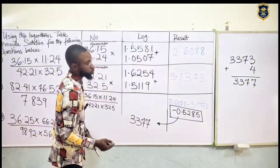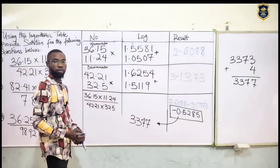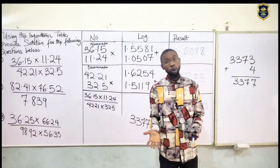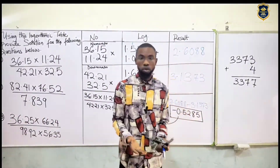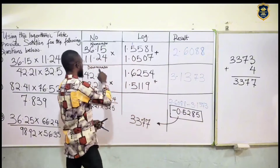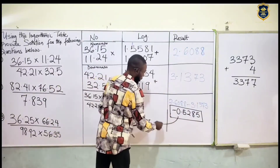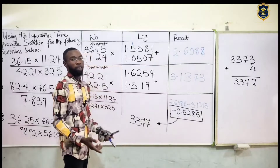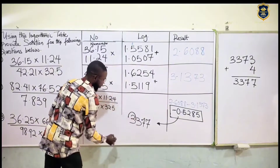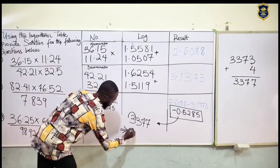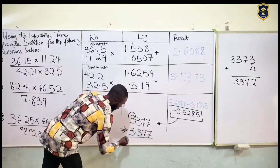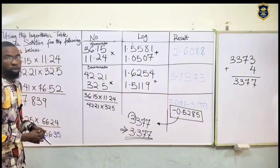The antilog of this is simply 3377. But now we have a minus here — some people call it bar or minus. So what do we do? We add 1 to the characteristics of the antilog. Adding 1 to 0, we have 1. So we will move one place — our answer simply becomes 3.377. That's the answer to this question.